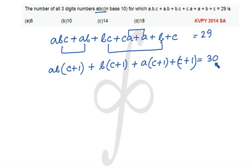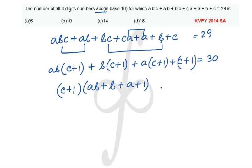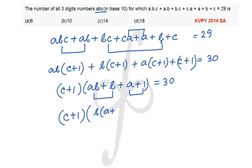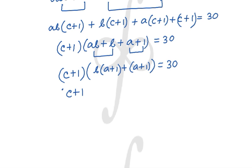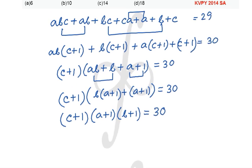Adding 1 on both sides gives us 30 on the right. We get a common factor of (C+1), which we take out. The other factor becomes AB + B + A + 1, which equals (A+1)(B+1). So the LHS factorizes completely to (C+1)(A+1)(B+1) = 30.